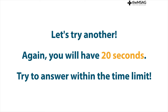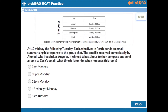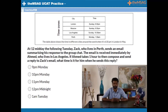Now try this slightly harder question, based on the same table, in the same amount of time. Question 2: At 12 midday the following Tuesday, Zach, who lives in Perth, sends an email summarising his response to the group chat. The email is received immediately by Ahmed, who lives in Los Angeles. If Ahmed takes one hour to then compose and send a reply to Zach's email, what time is it for him when he sends this reply?